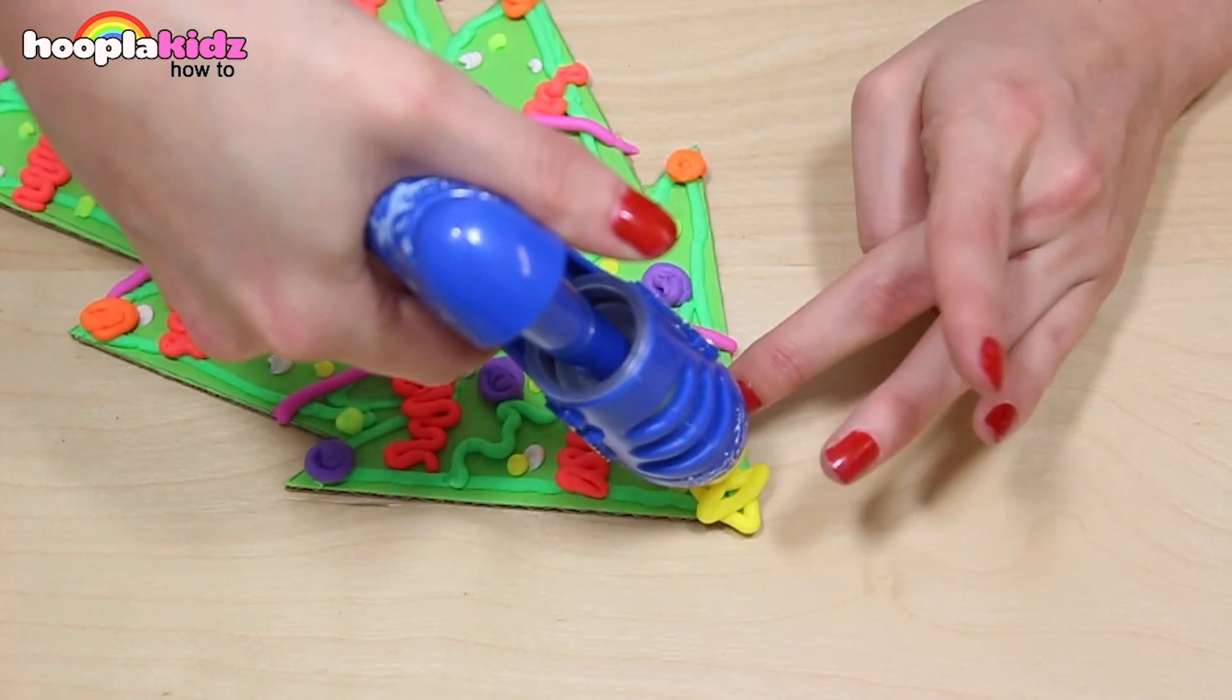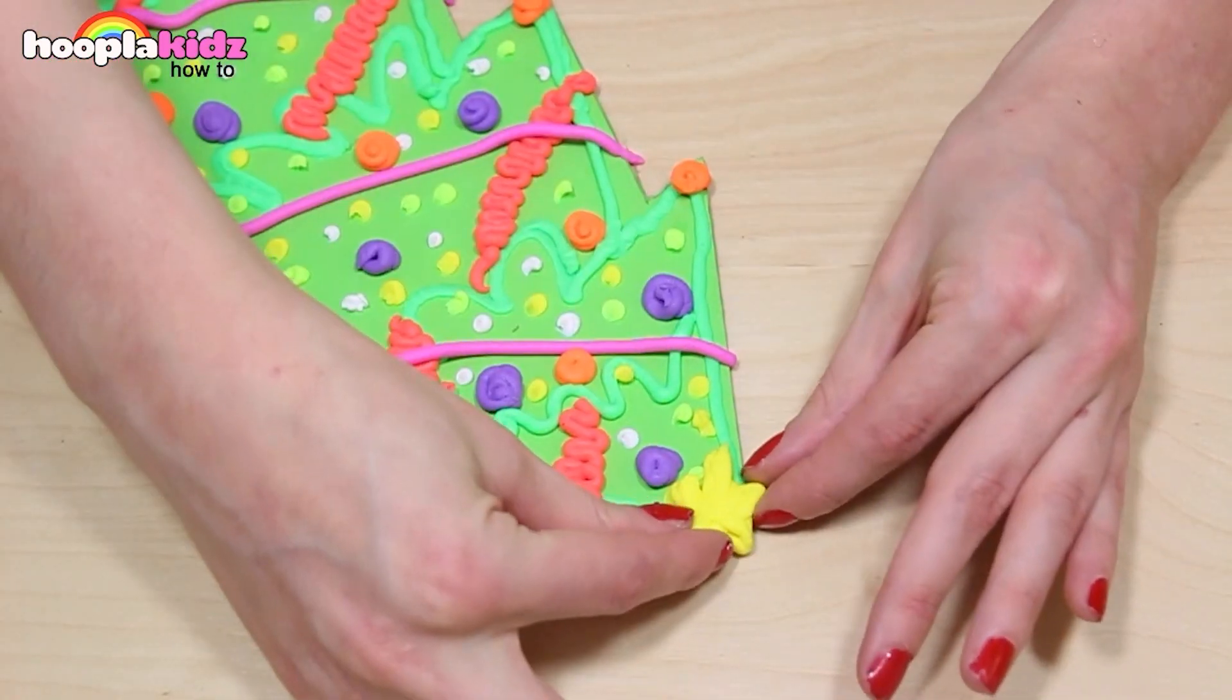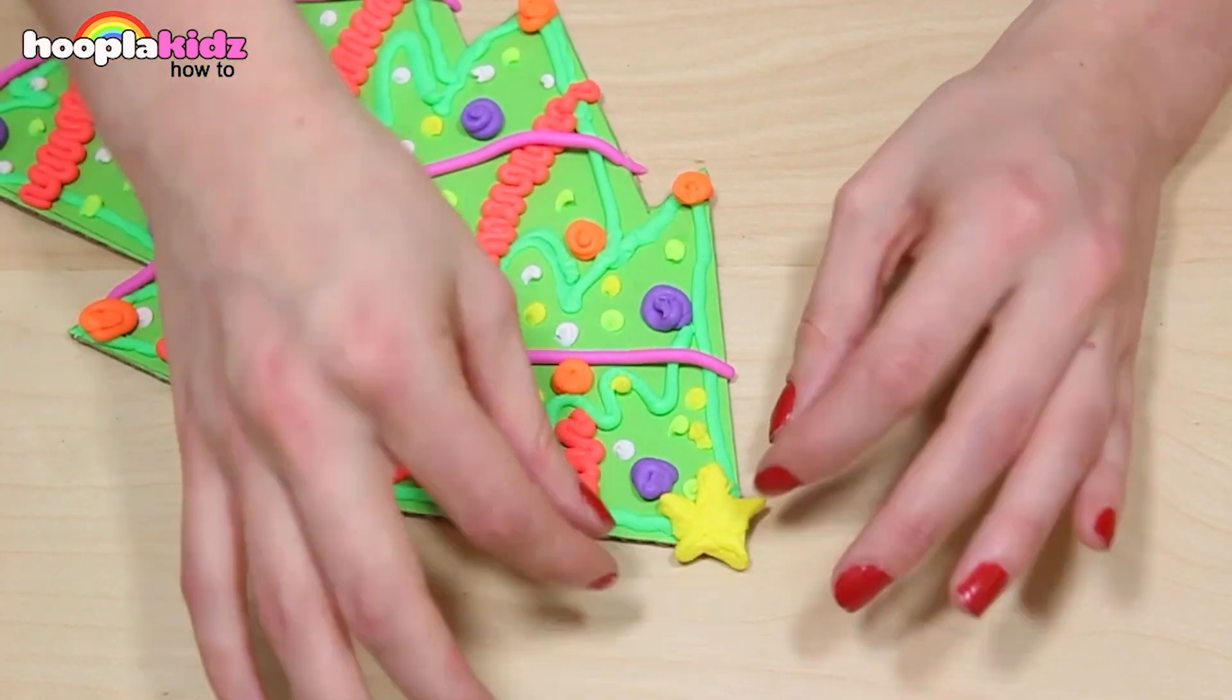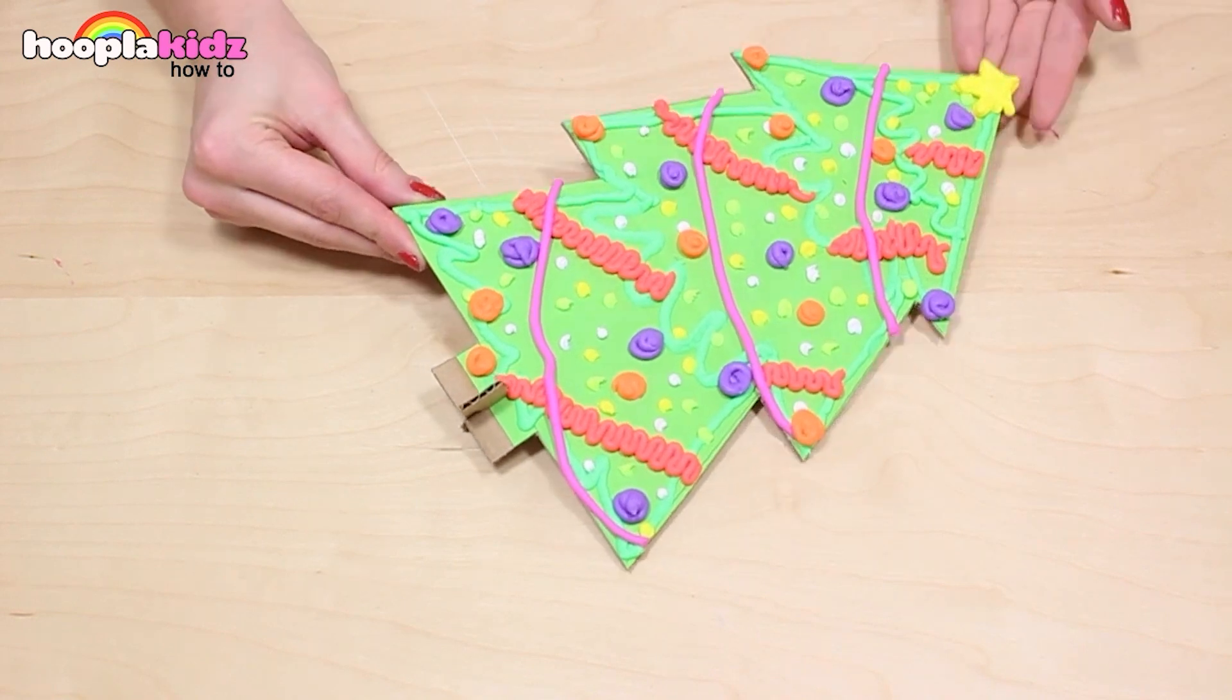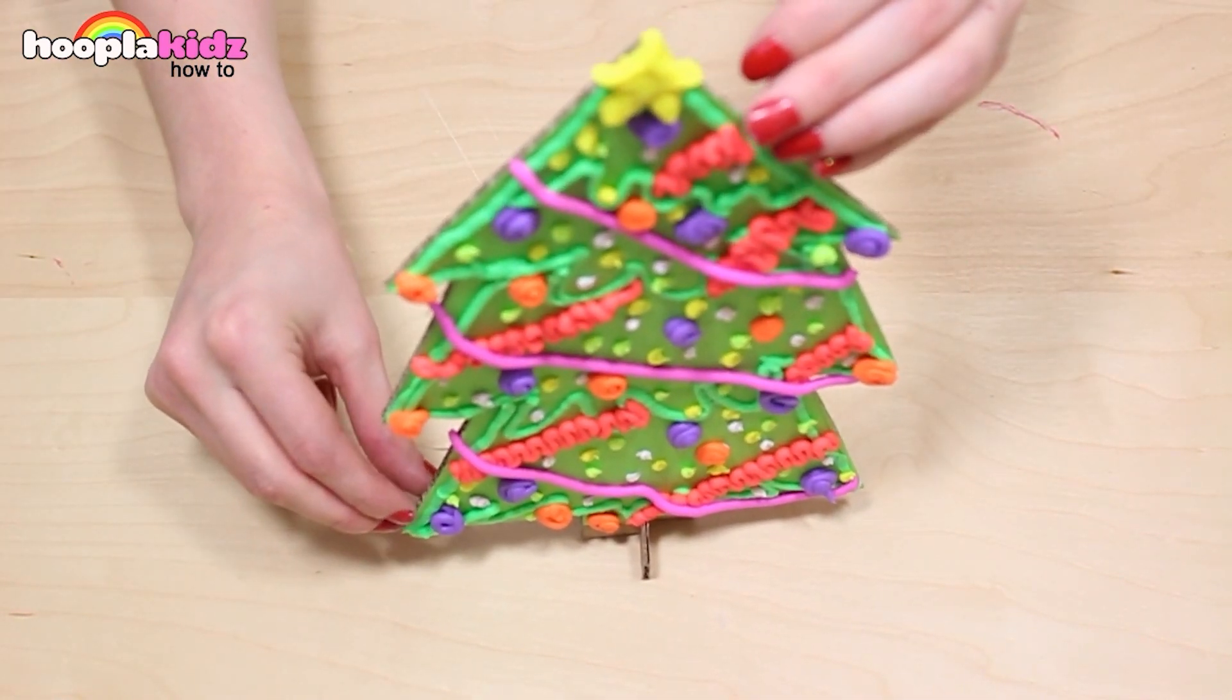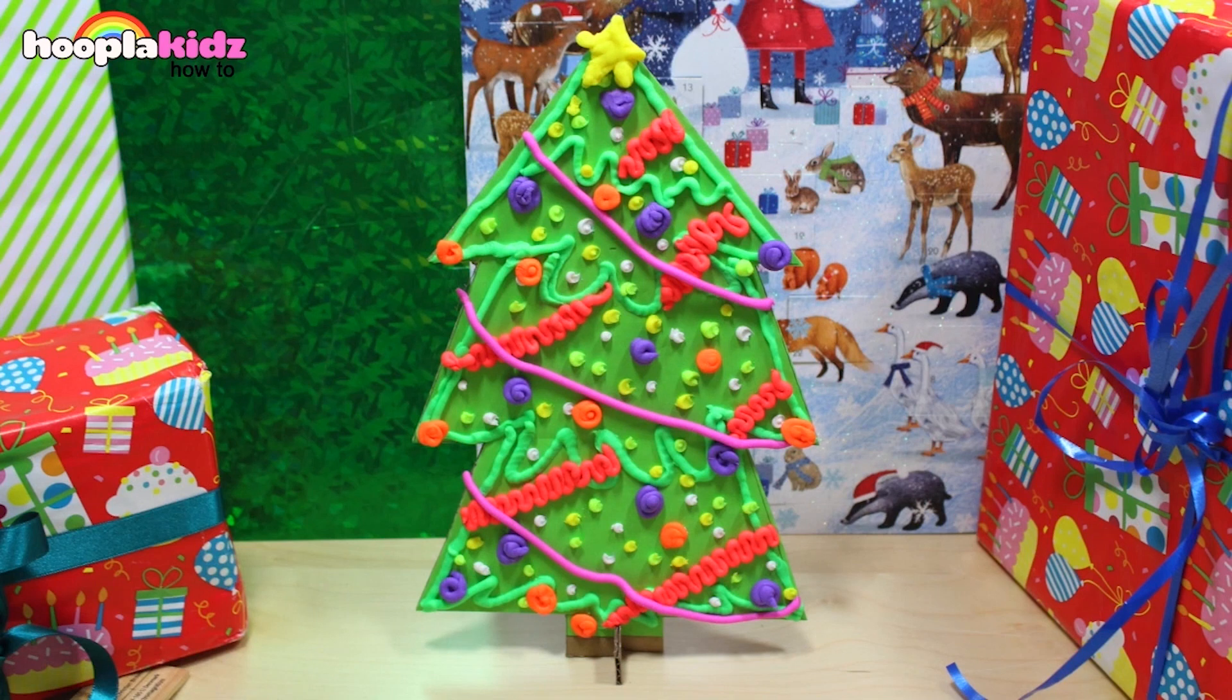Now, finally, I'm doing a yellow star at the top of the tree. And it's complete. Reattach your base. And there you have it. Look how great it looks from here. It's all 3D. Super fun! A DoVinci Christmas tree!